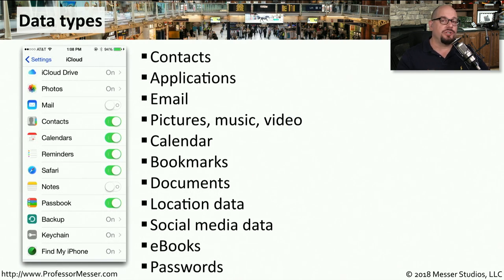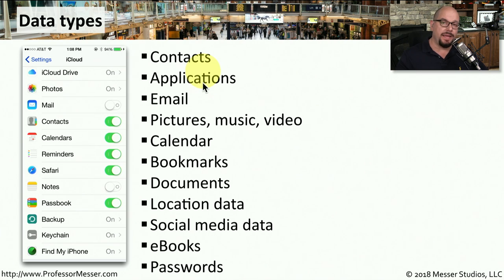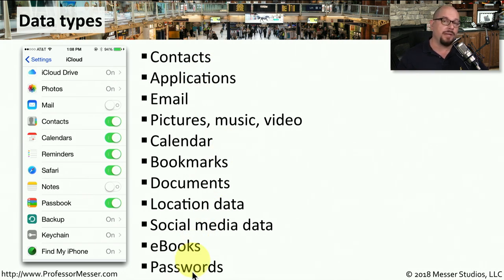Here's a summary of just some of the data that we tend to synchronize between all of these different devices: our contact list, the applications that we use, our email messages, bookmarks, documents, e-books, and even our passwords are now shared amongst all of our different mobile devices.